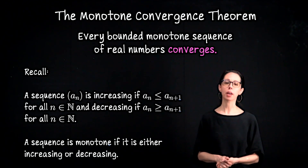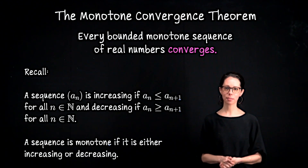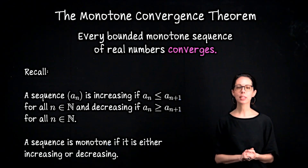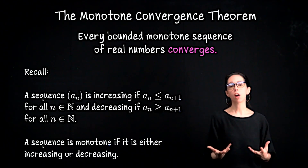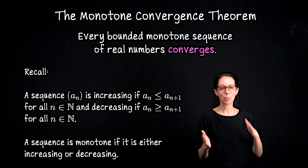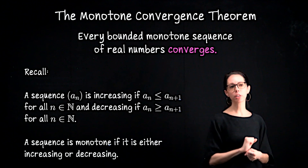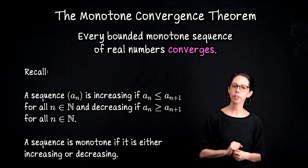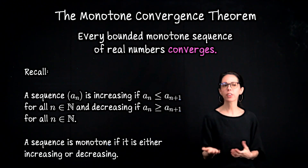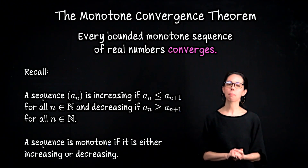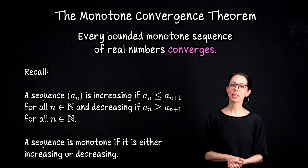This video is going to be a look at the monotone convergence theorem, which is a theorem about real number sequences. A sequence is increasing if a sub n is less than or equal to a sub n plus 1 for all indices n — as we progress, the terms only get bigger. A sequence is decreasing if a sub n is greater than or equal to the next term for all terms. We say a sequence is monotone if it is increasing or decreasing.